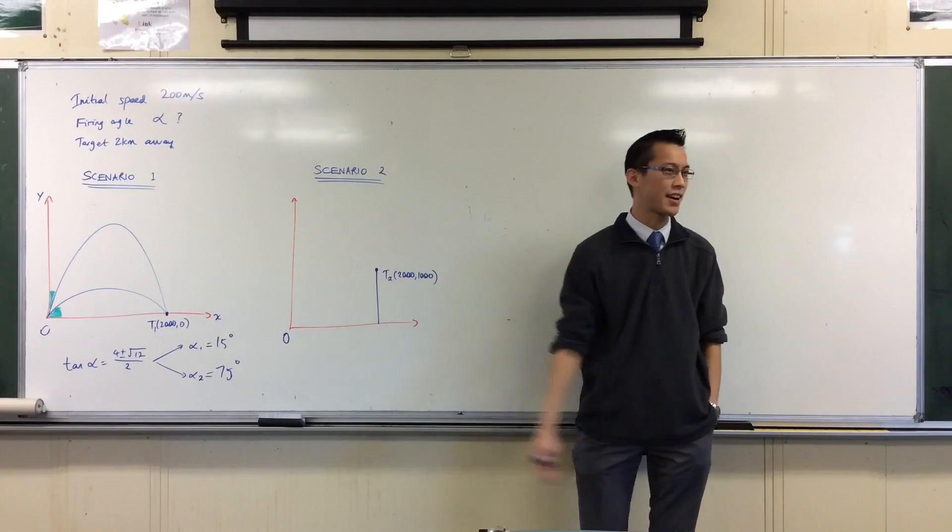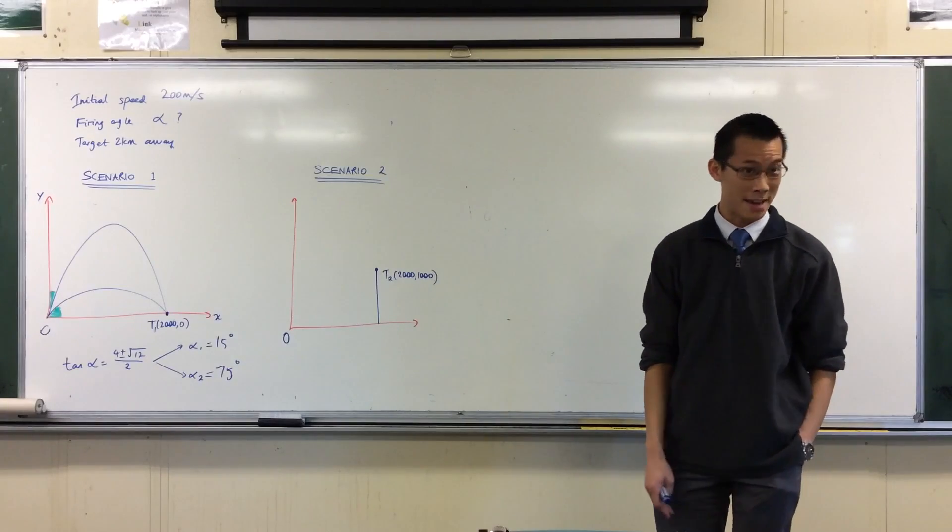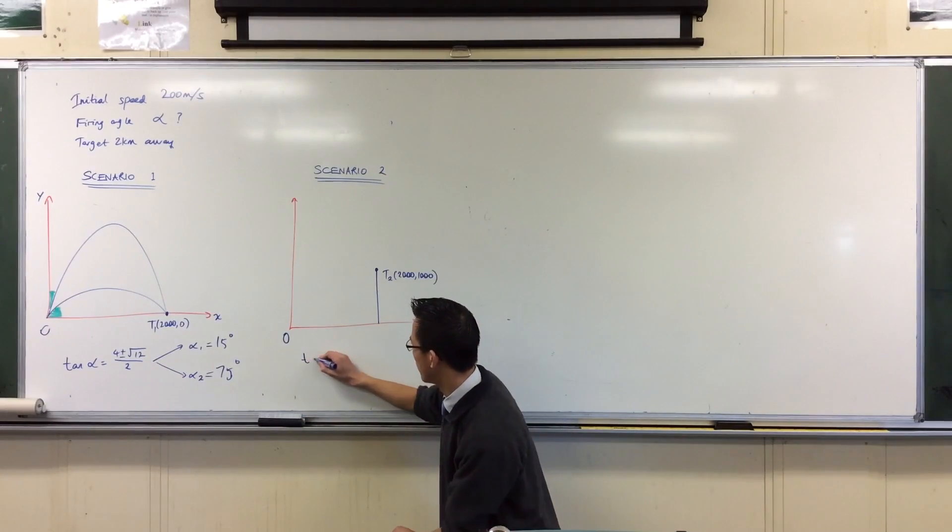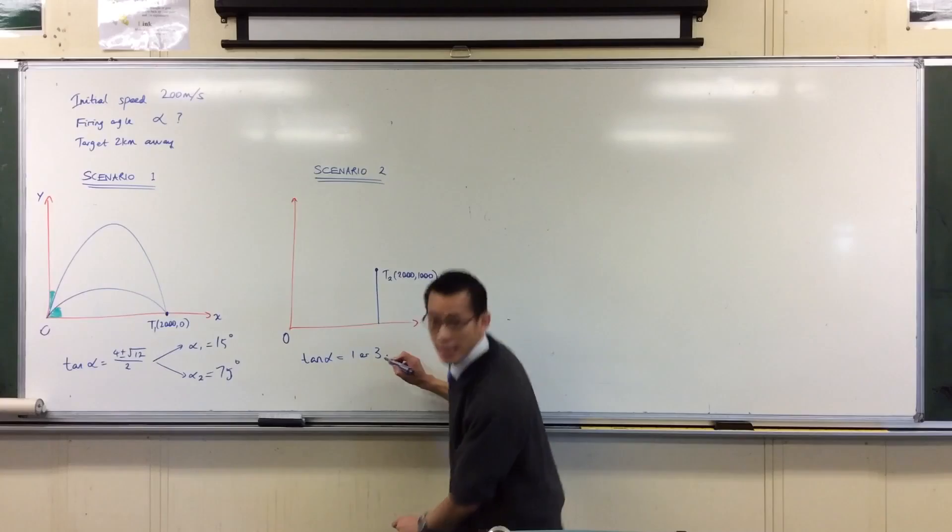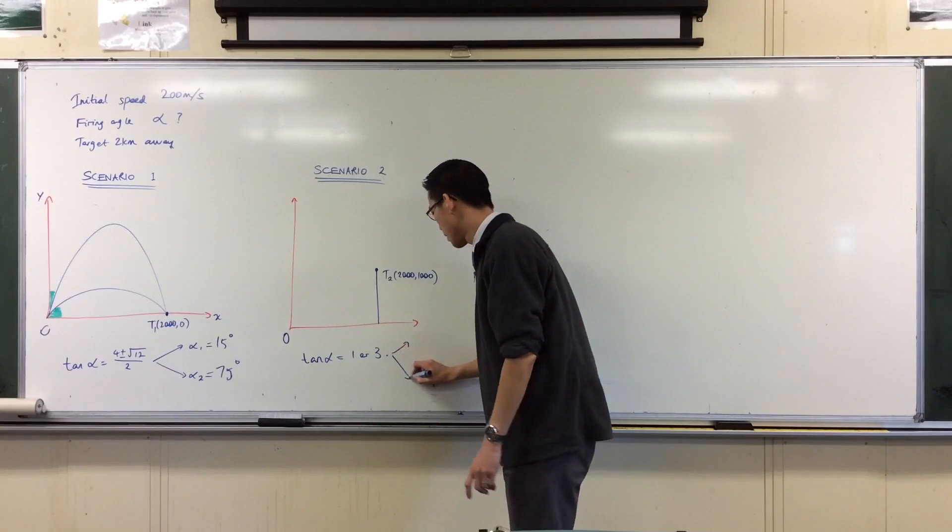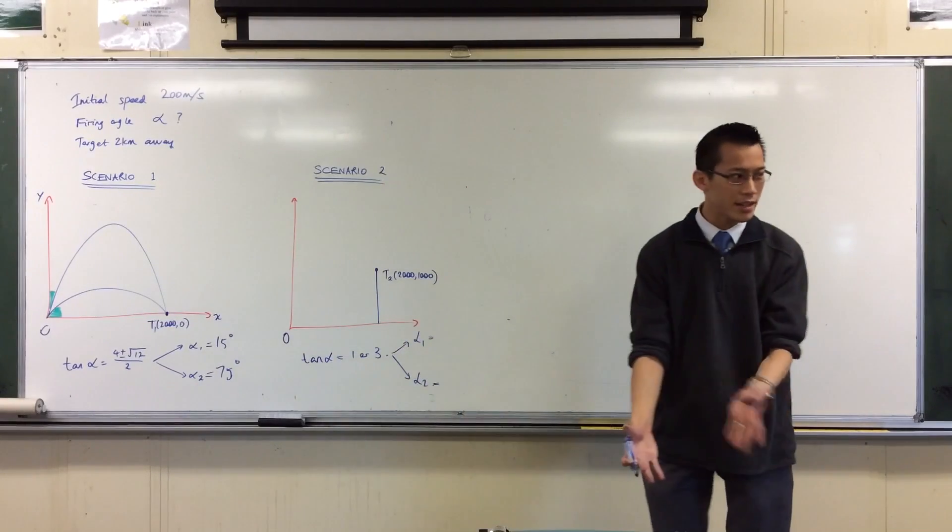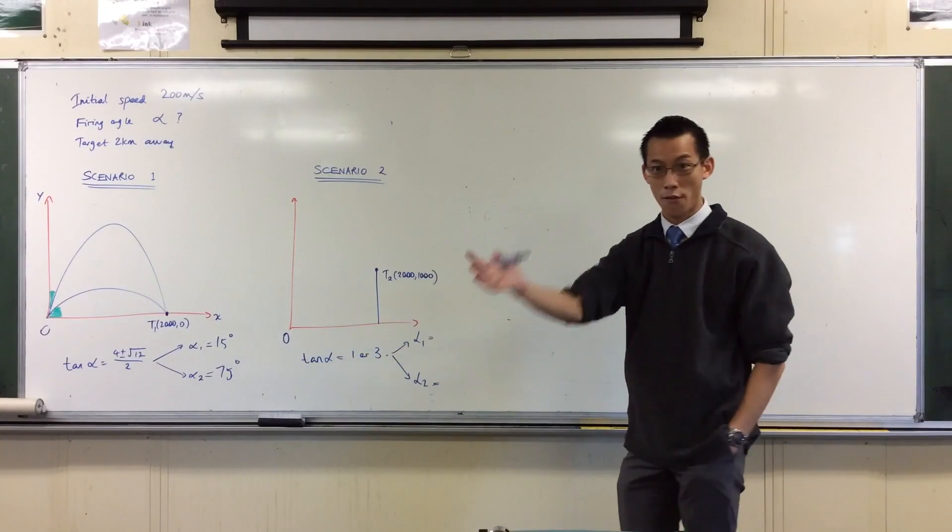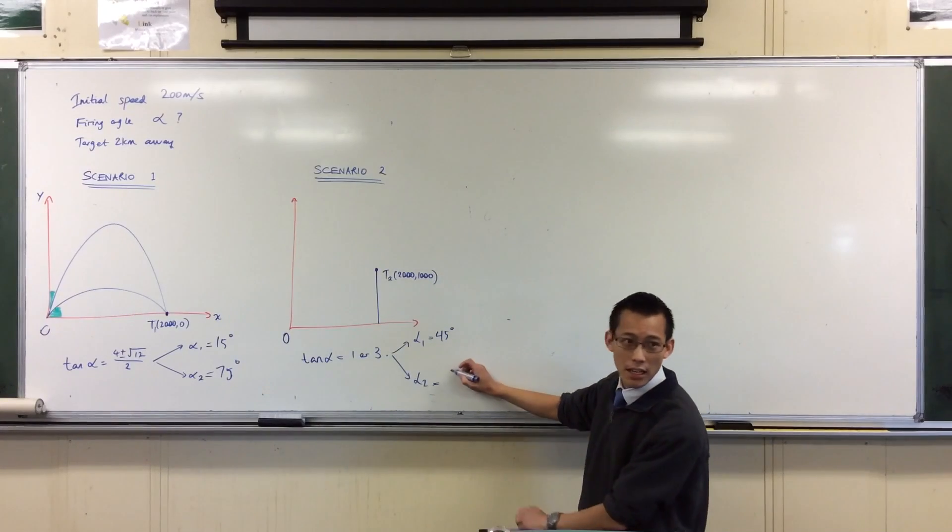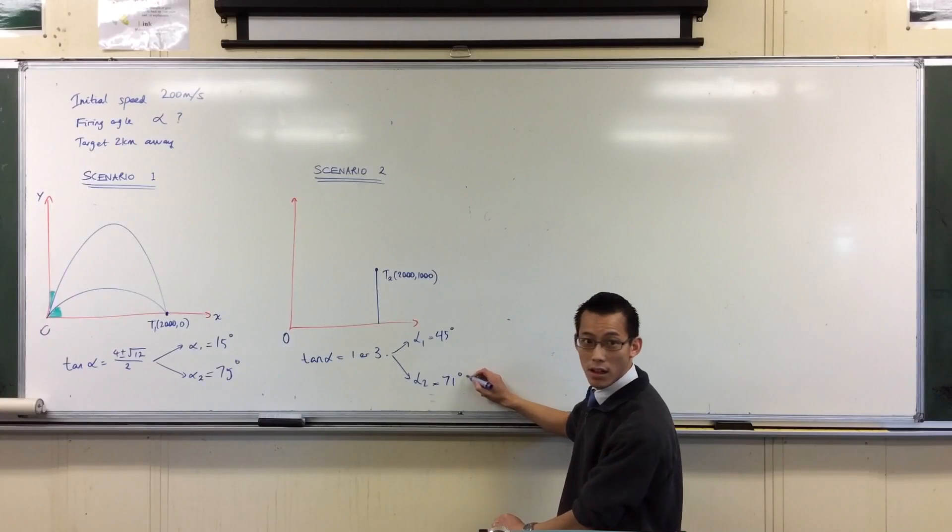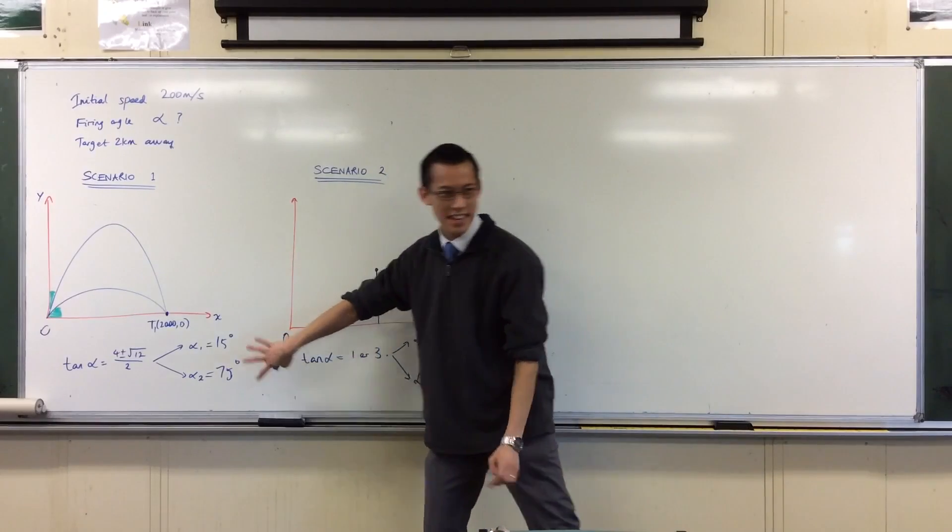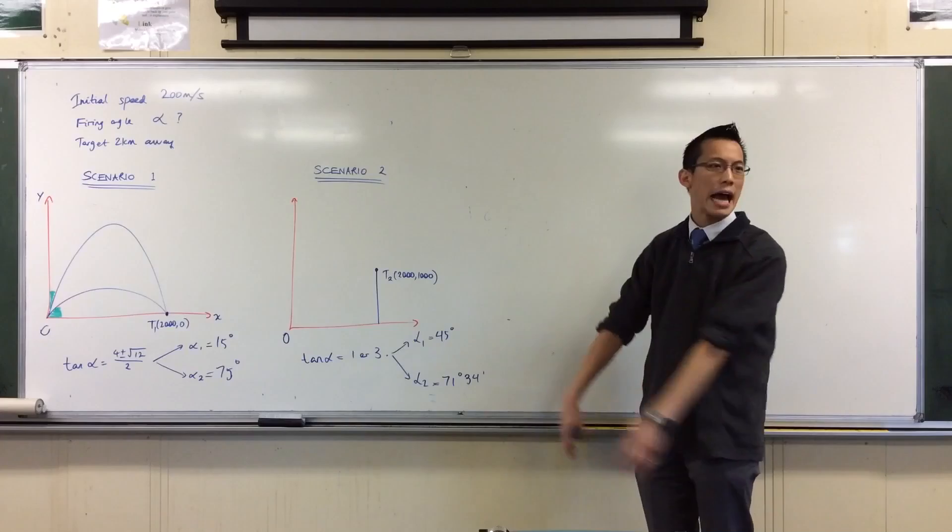Then we posed this question: what happens if we raise the target and put it a kilometer in the air, maybe on top of a mountain or something like that? Again, you get down to this stage. You get to this point - you get tan alpha being one or three. So you think, okay, again I've got two angles, an alpha 1 and an alpha 2. But mysteriously, well we all know what tan inverse of 1 is - it's 45 degrees - and then you get something weird and awkward here. To the nearest minute it's 71 and 34 minutes. So you look at that and think what's gone wrong? We expected something nice and neat, some kind of relationship, and there is a relationship, it's not exactly the same.